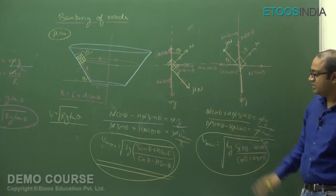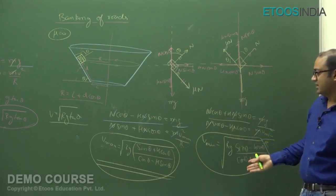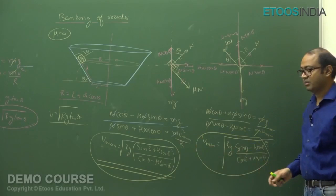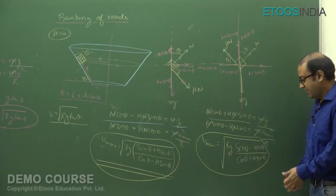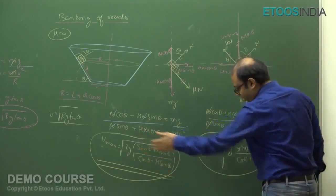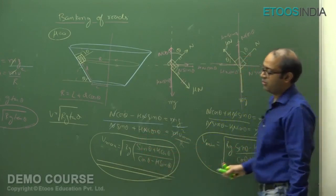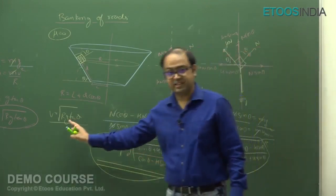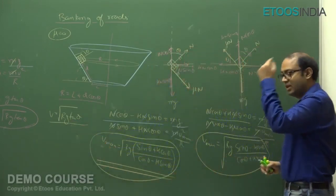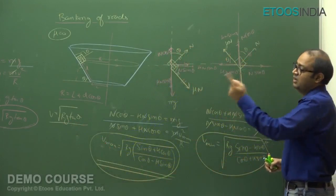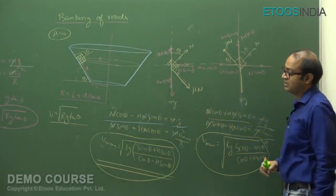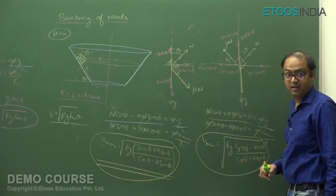If mu = 0, both v_min and v_max reduce to √(rg tan theta). So if there is no friction, there is only one velocity — √(rg tan theta) — for which the particle will move on the same circular path. Just try and write down the whole solution yourself.